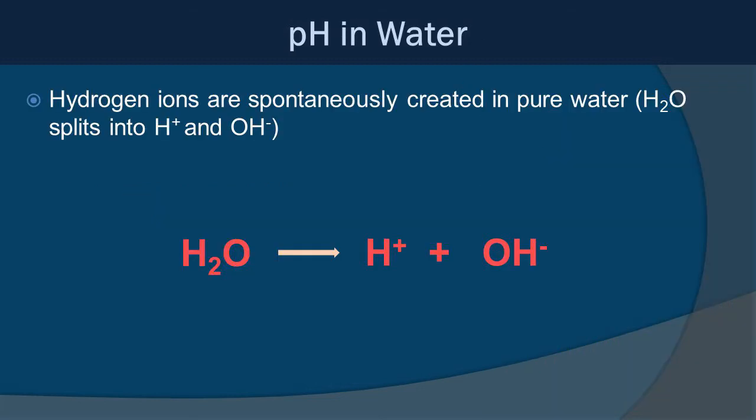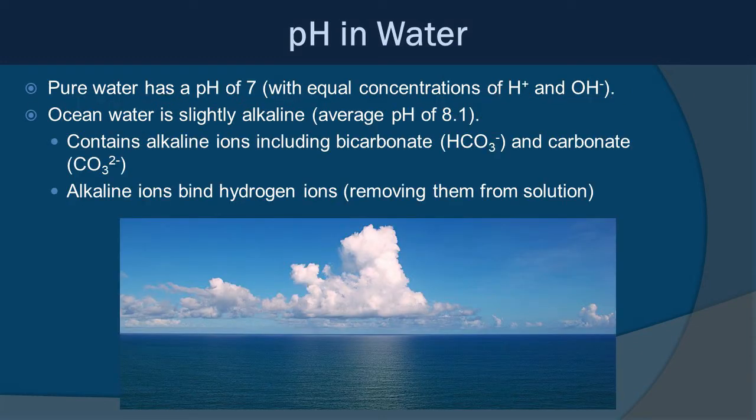Hydrogen ions are spontaneously created in pure water: H2O splits into a hydrogen ion and a hydroxide ion. Pure water has a pH of 7, with equal concentrations of hydrogen ions and hydroxide ions. Ocean water is slightly alkaline with an average pH of around 8.1. It contains alkaline ions including bicarbonate and carbonate, which bind hydrogen ions and remove them from solution, reducing acidity and increasing pH.